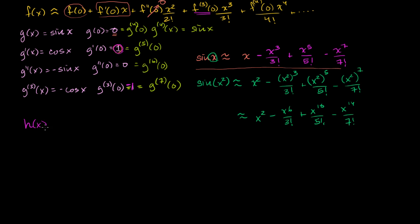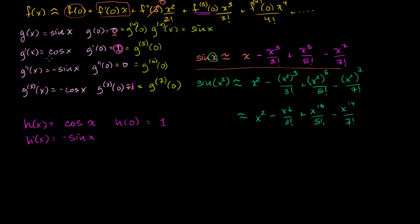If we say that h of x is equal to cosine of x, then h of 0 is going to be equal to cosine of 0, which equals 1. Then h prime of x is going to be equal to negative sine of x. This is essentially one step ahead of where we were with g of x, but we'll redo it here to make it clear.